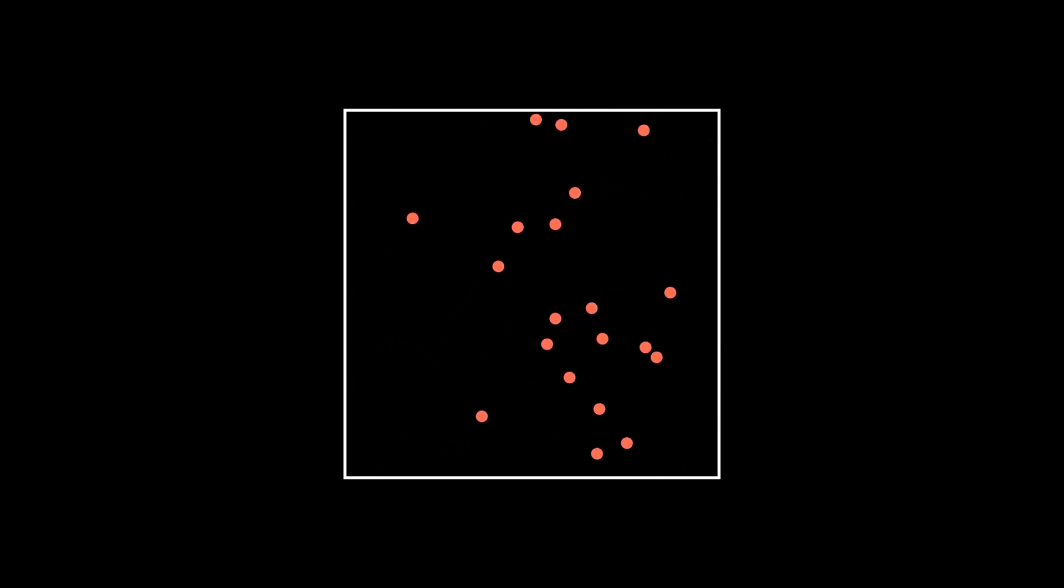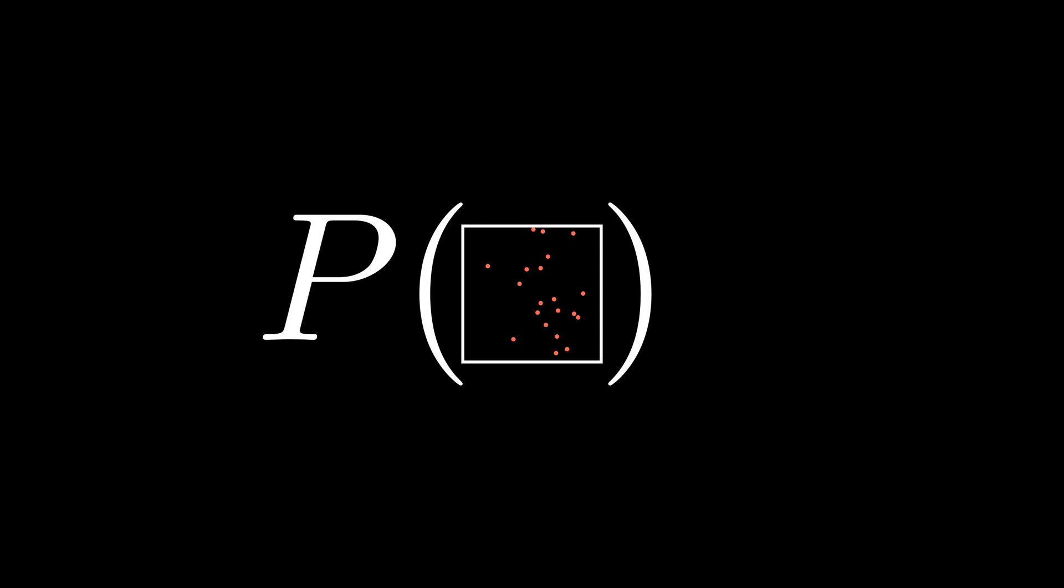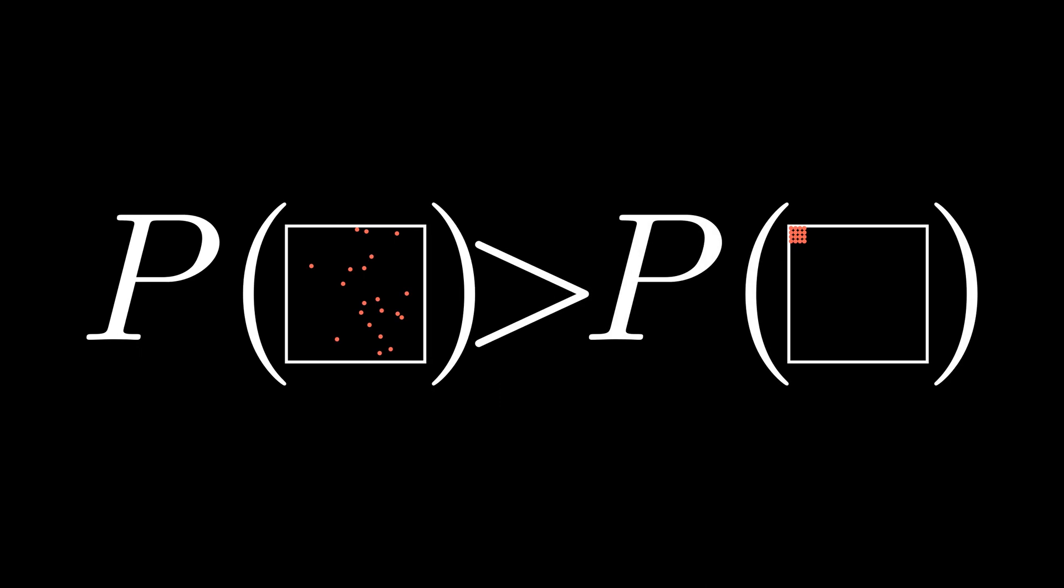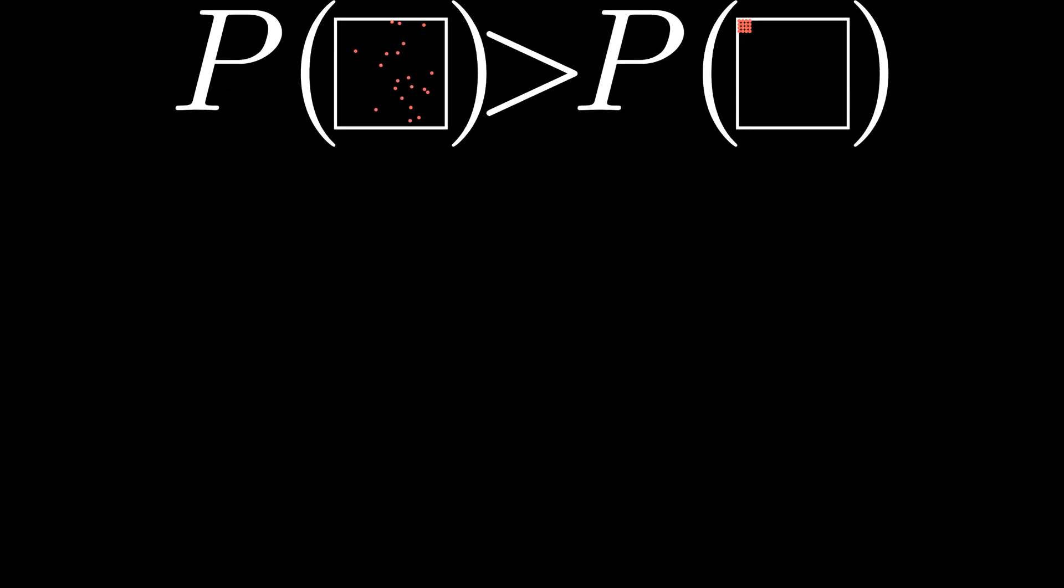Instead, based on the gas's macroscopic properties, we know what the probability is of the molecules being in any particular configuration. For example, it is much more likely that the molecules are spread out throughout the container than that they are tightly packed into a corner, both because it takes much more energy to pack them together, and because there are more ways for the molecules to be spread out.